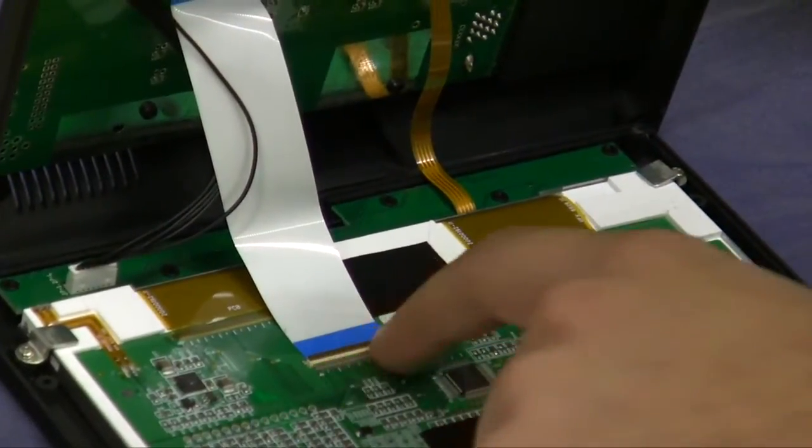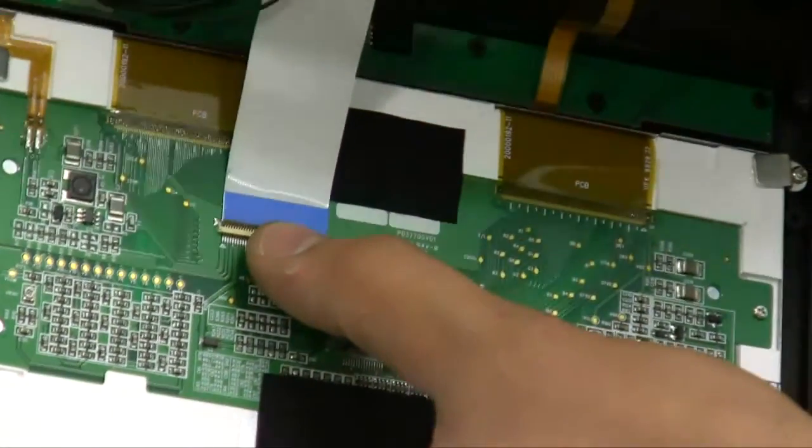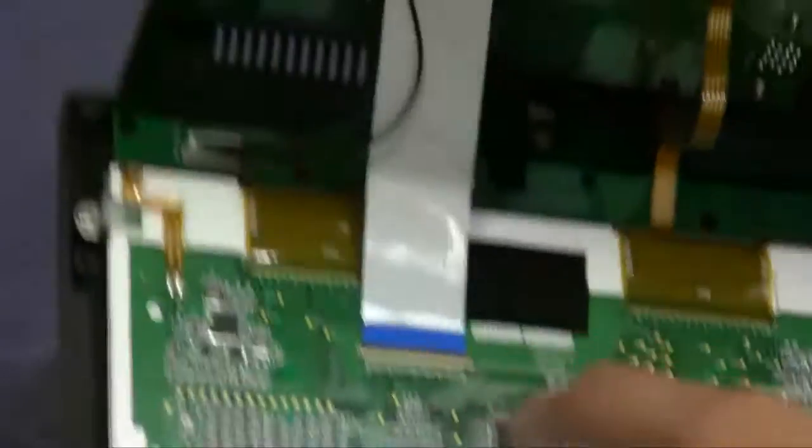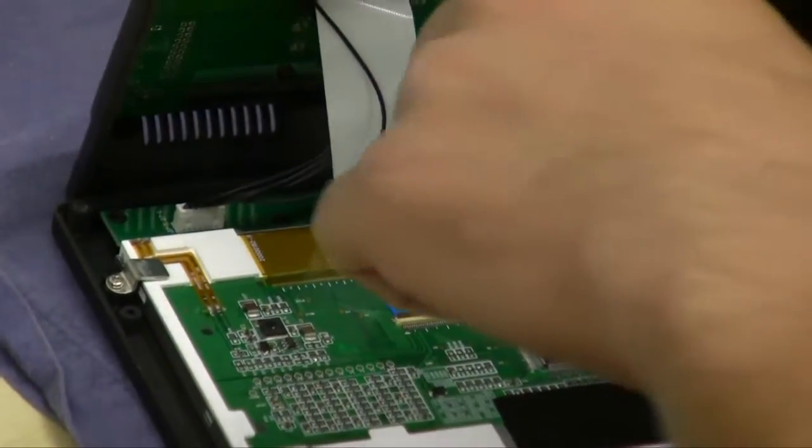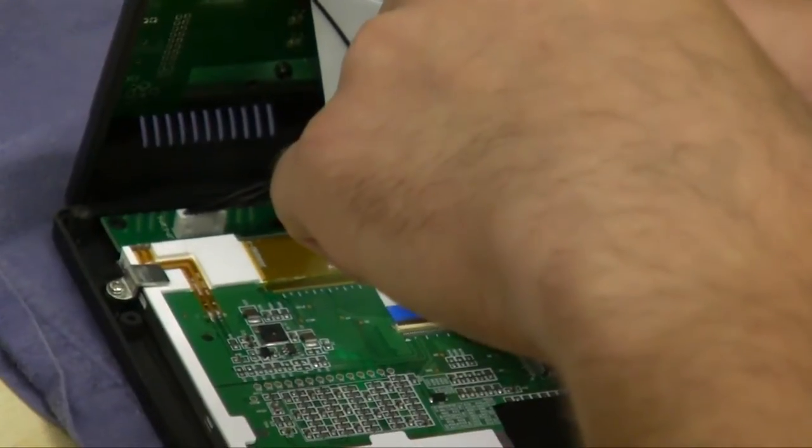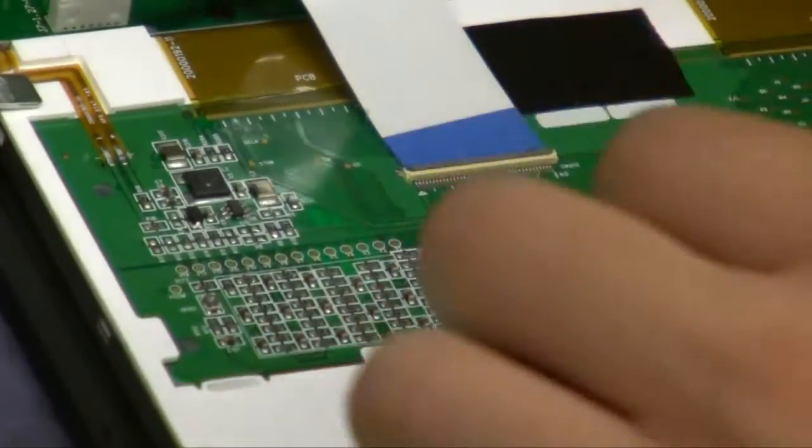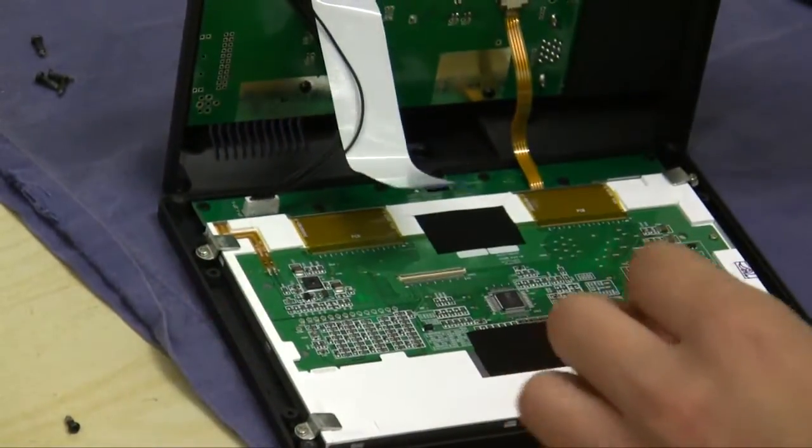When you're going to flip this tab up, be really, really careful because it is really fragile. Just kind of dig a nail underneath it and pull straight up. It's going to flip open. Just pull the ribbon cable out.